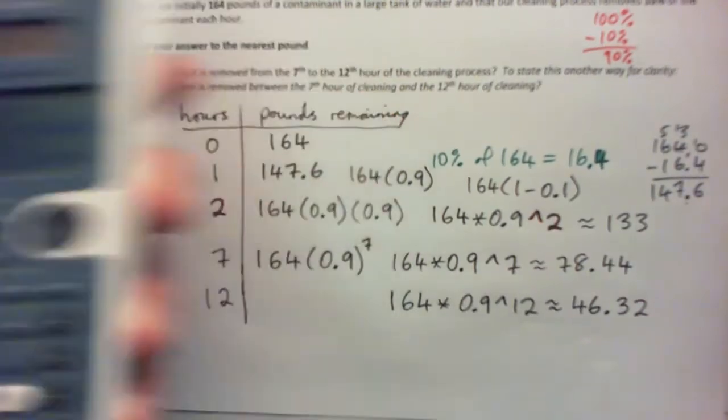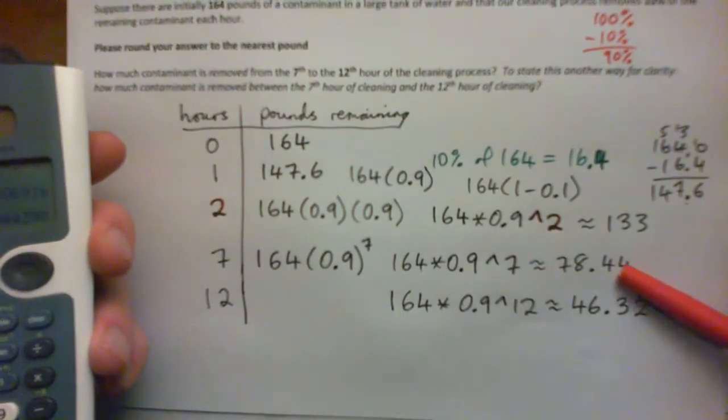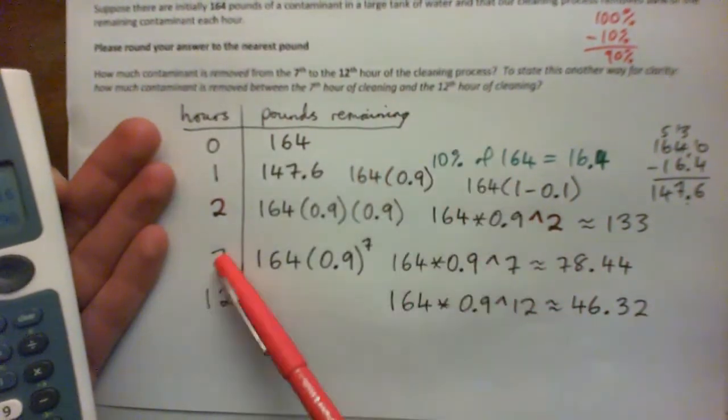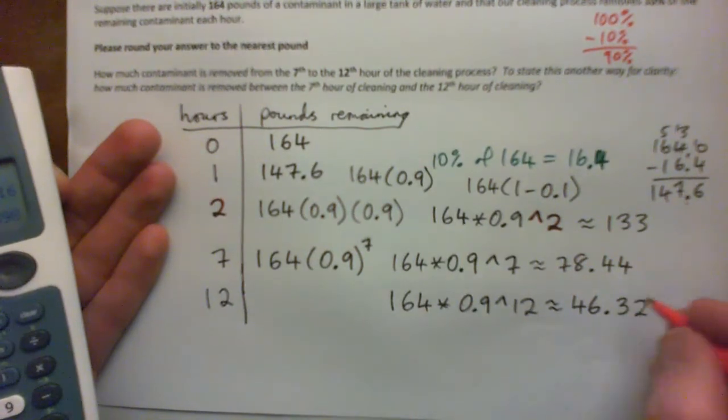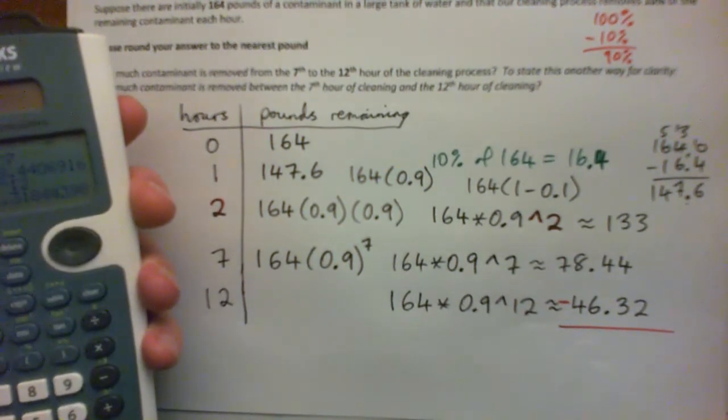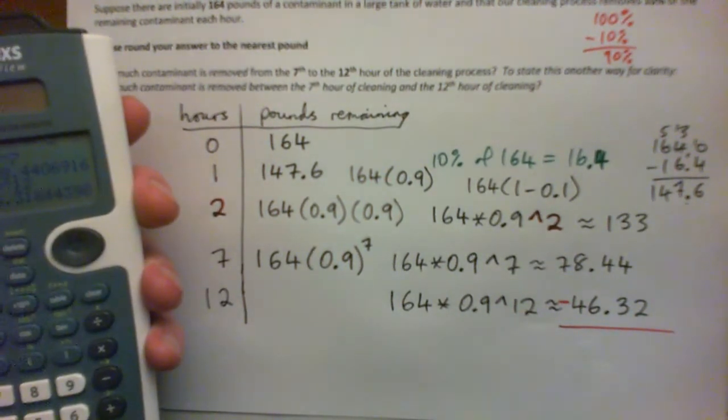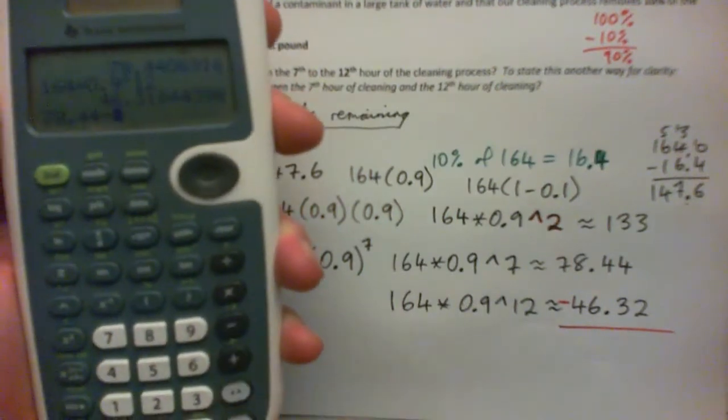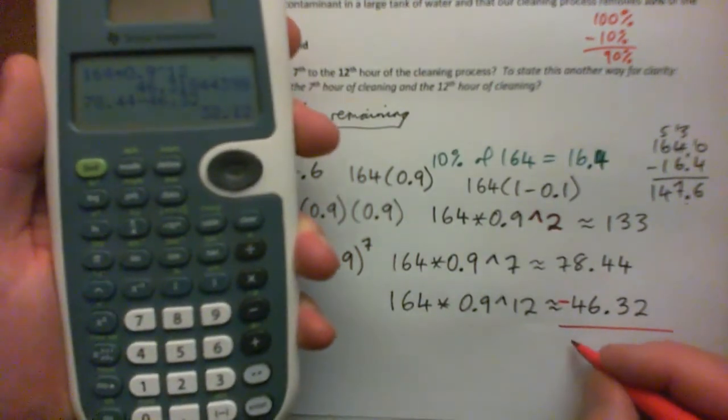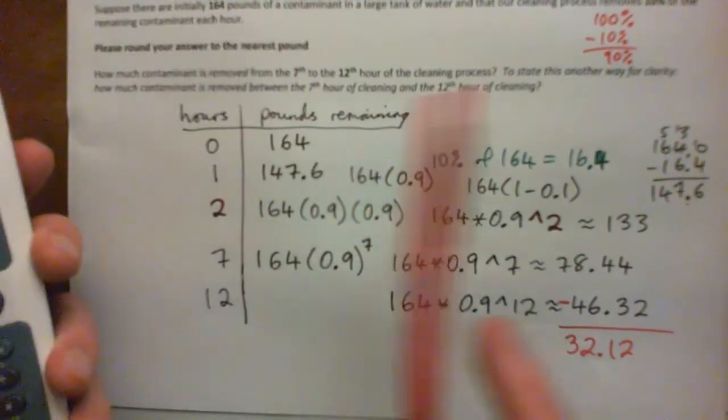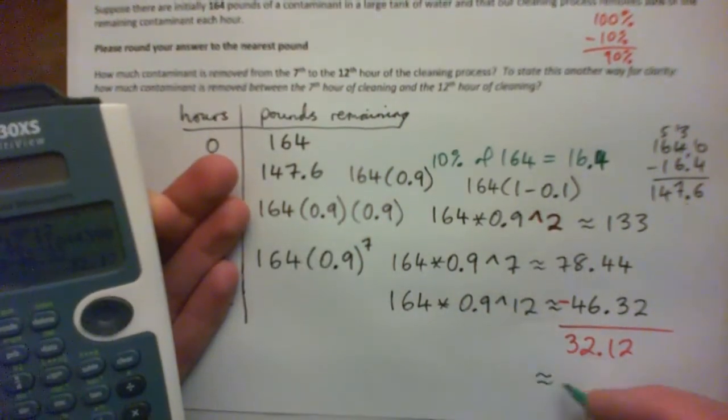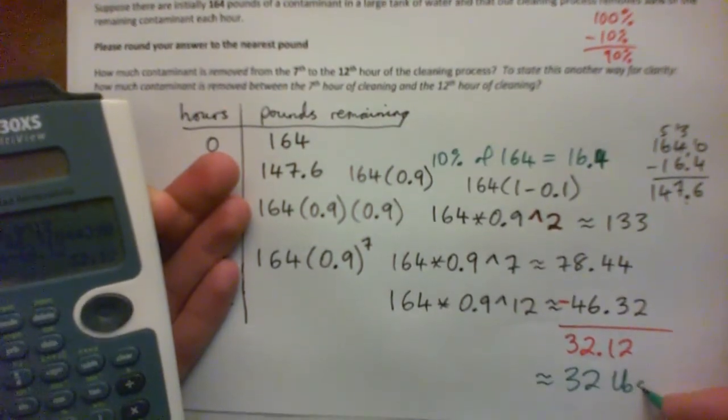And then I can just subtract. Because if there's about 78 pounds after 7 hours and about 46 after 12 hours, what is removed between the 7th and 12th hour? Well, just take this and subtract this. And we get the answer. So 78.44 minus 46.32, and I get 32.12. And it says, please round answer to the nearest pound. So that's handy because that'll round to just 32 pounds.